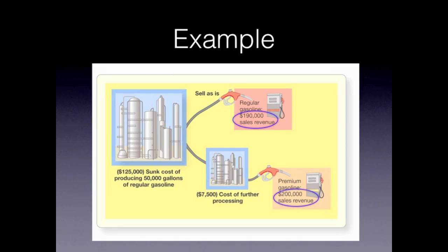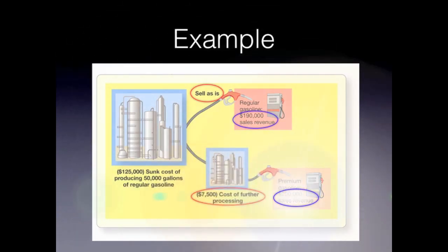But remember, there's typically a cost involved when you process a product further — just as in this case. With sell as is, there is no cost involved. However, with processing further, we would need to pay $7,500 in additional cost. So we have to take into consideration that there's $10,000 more in revenues if we process further, but there's also $7,500 in additional cost of processing further. Since $10,000 is higher than $7,500, we should process the product further.